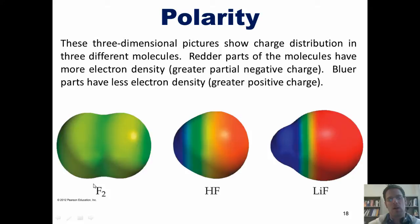You'll notice that in the molecule F2, where both of the atoms, fluorines, are equally electronegative, there's a completely even sharing of electron density.